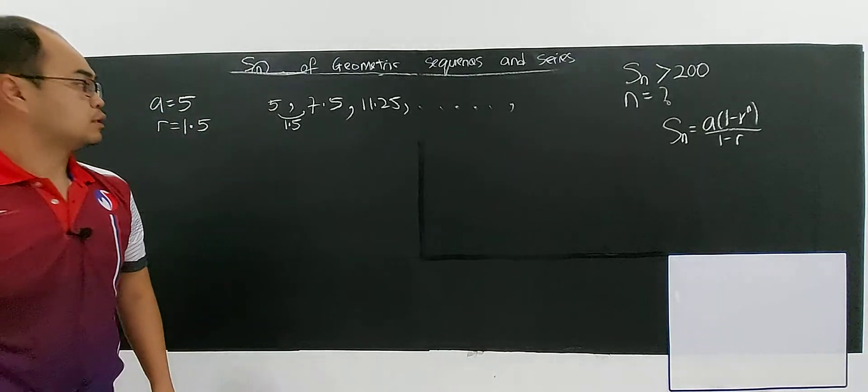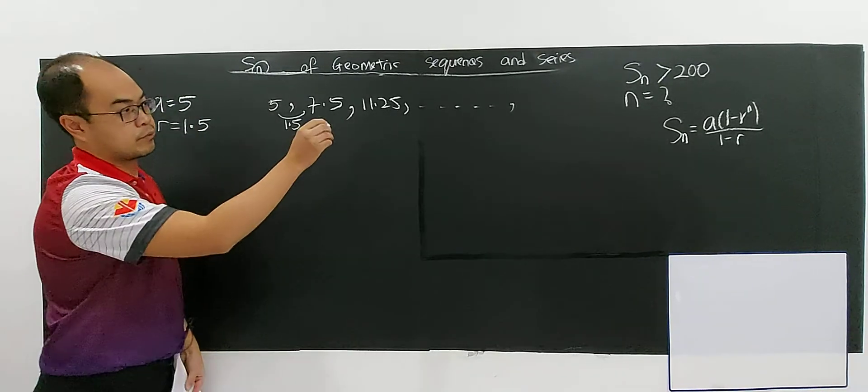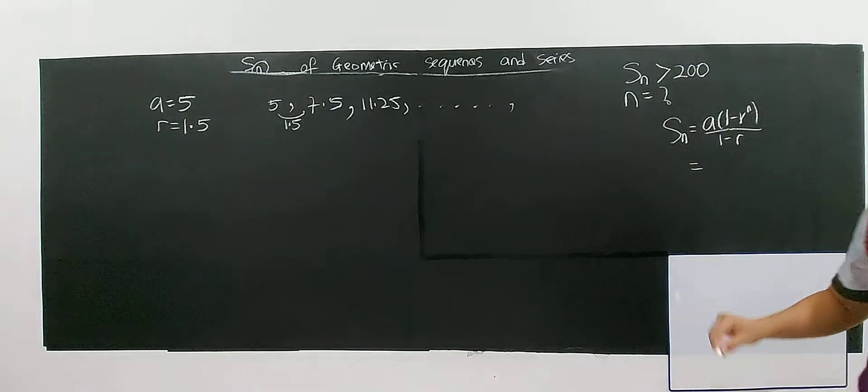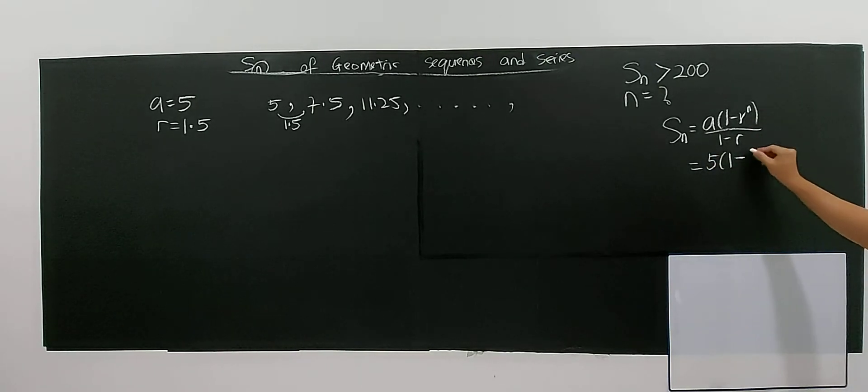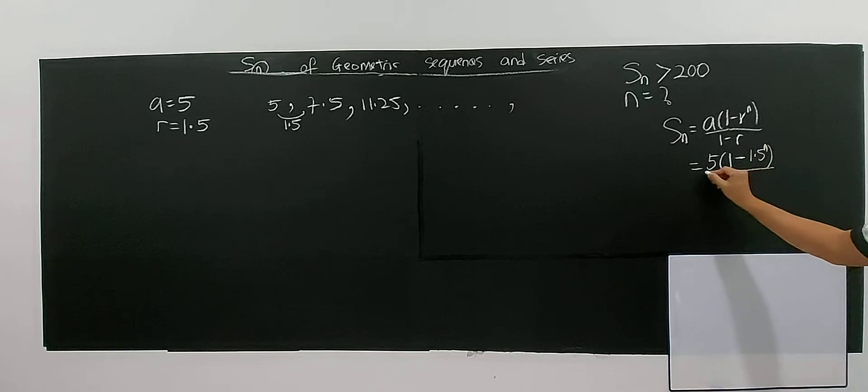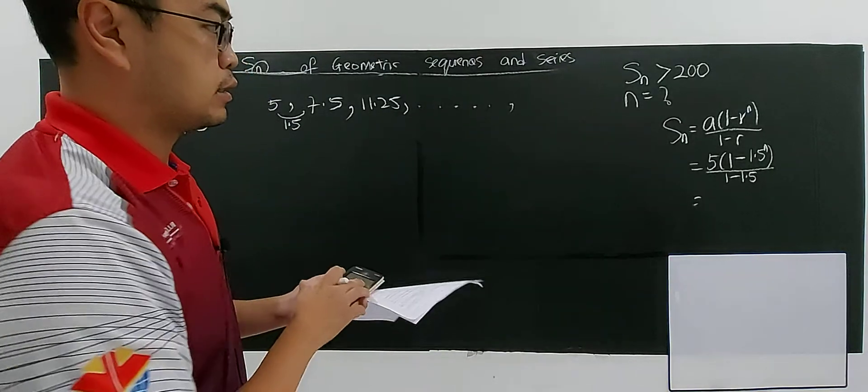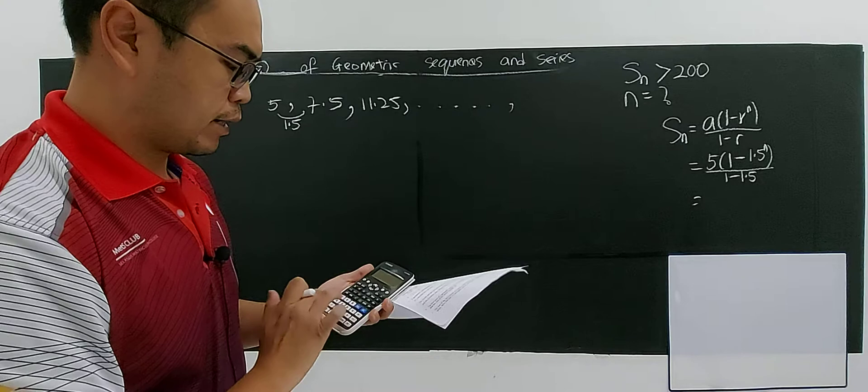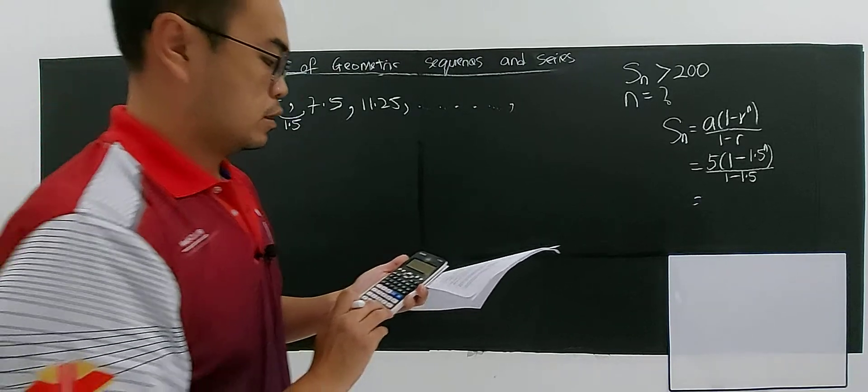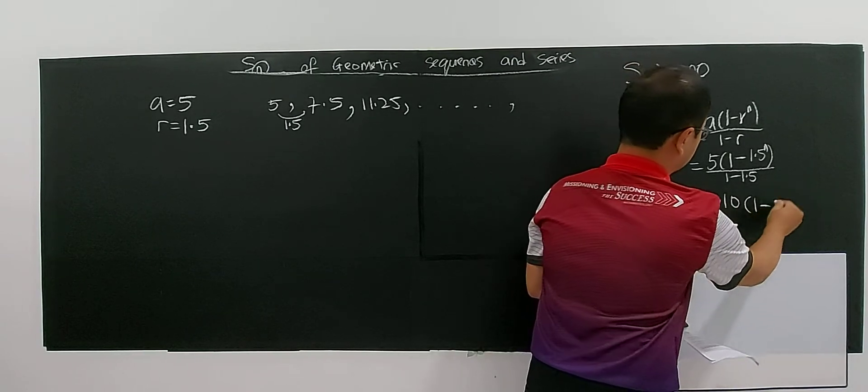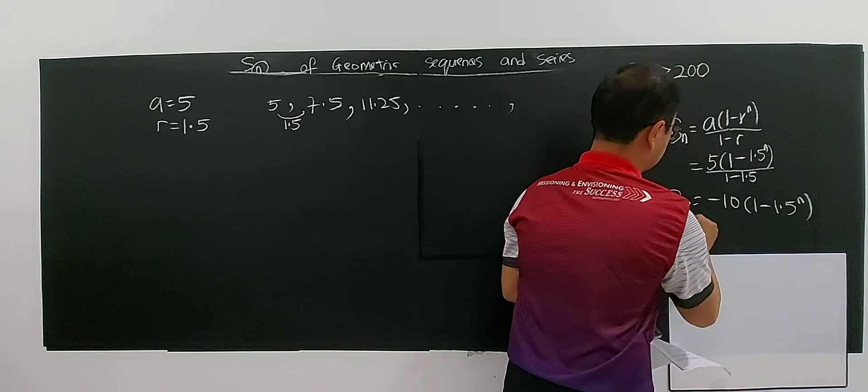So now's the time, you want to find the sum is greater than the sum. I need to rewrite this one, the SN to be A first. The A is 5, 1 minus R is 1.5 to the power n, over 1 minus 1.5. I better calculate first before I solve the inequality. So 5 divided by 1 minus 1.5, negative 0.5, you are getting negative 10. Negative 10 times 1 minus 1.5 power n. This is your SN after simplify.